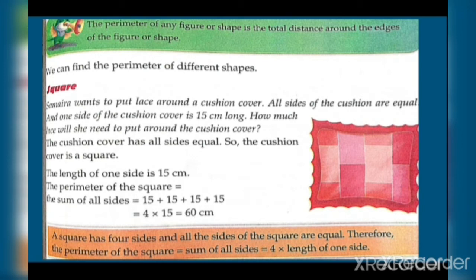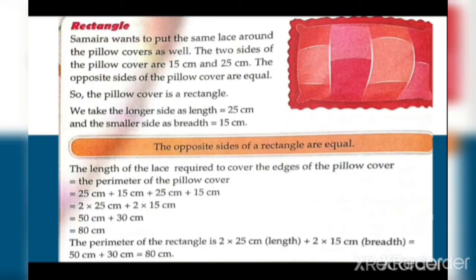For a rectangle: Samira wants to put the same lace around a pillow cover. Two sides of the pillow cover are 15 cm and 25 cm. Since the pillow cover is a rectangle, opposite sides are equal. So the perimeter is 25 plus 15 plus 25 plus 15, which equals 80 cm of lace.